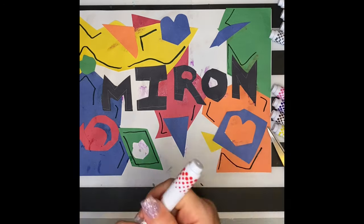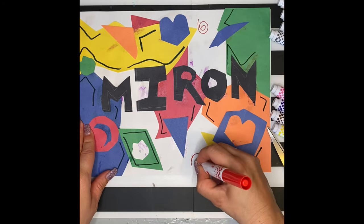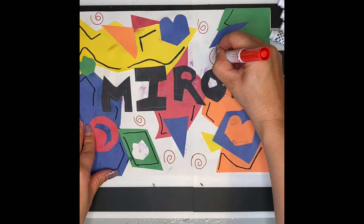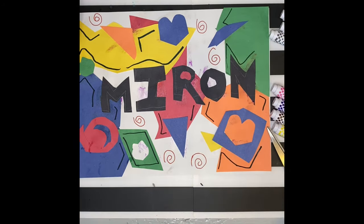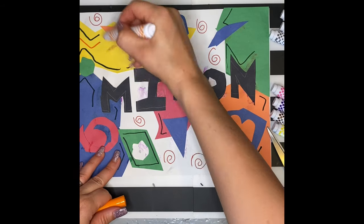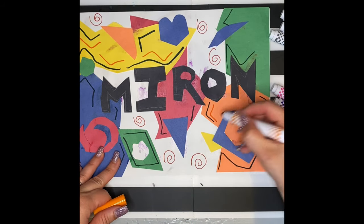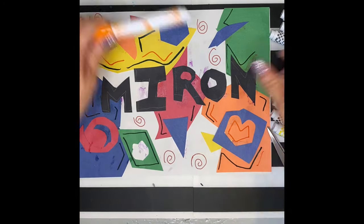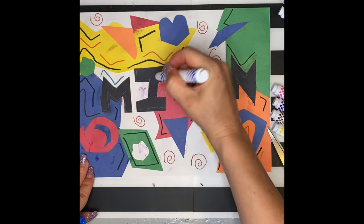Using some other markers, I can go into the white areas and add some different types of lines. Some swirl lines, some diagonal lines, you can draw some shapes, whatever you want. It almost looks like Myron's at a party. You can call it your party collage if you want.